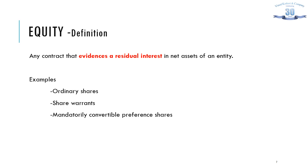While in most situations the above examples would be equity, there are situations where they could be classified as financial liability. Equity, being any contract that evidences a residual interest in the net assets of the entity, is also a residuary category. In classifying a financial instrument as liability or equity, equity classification is appropriate only if the instrument fails the definition of a financial liability. Hence, it is very important to understand what a financial liability is, since whatever is not a financial liability is an equity instrument.